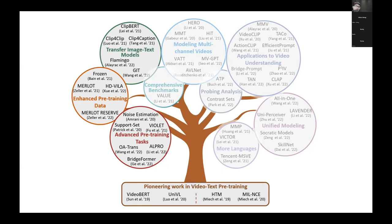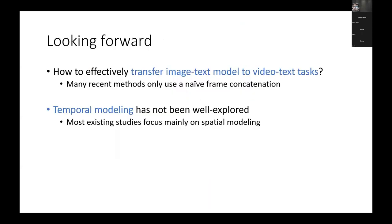In summary, I have talked about fundamentals and important concepts in video-language pre-training, enhanced pre-training data, and recent new pre-training approaches. I also discussed methods that transfer image-text pre-training models to the video task domain. Looking forward, how to effectively leverage and transfer image-text models to video-text tasks is still an open question. There are many recent papers such as Flamingo and others, but most methods simply concatenate frame features together, and I believe there are still many open directions to improve.